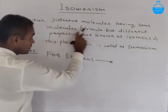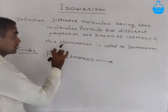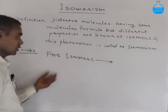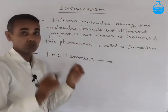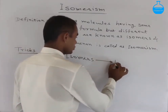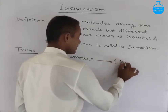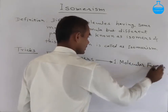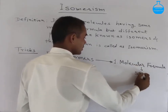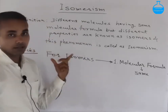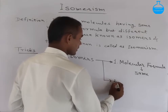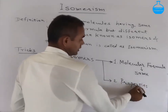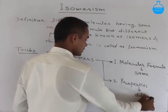So let me start this topic. First of all, the definition: different molecules having similar molecular formula but different properties are known as isomers, and this phenomenon is known as isomerism. Now we are taking some tricks to remember this definition. For isomers there are two points which must be satisfied. Point number one is molecular formula — the given compound's molecular formula must be similar for two or more molecules to be isomers.